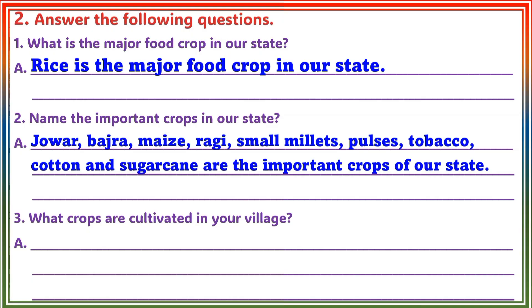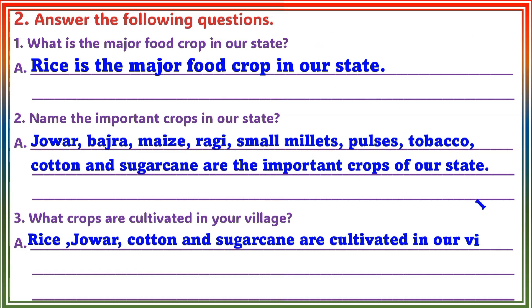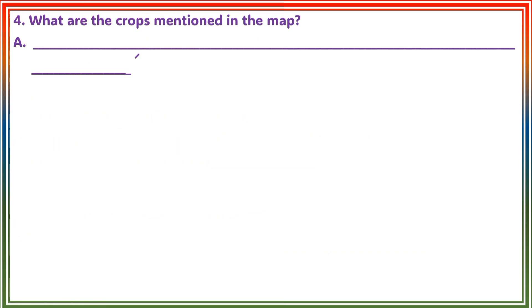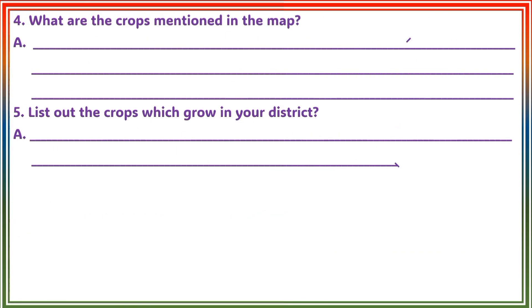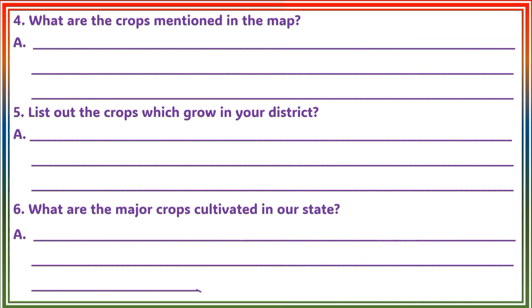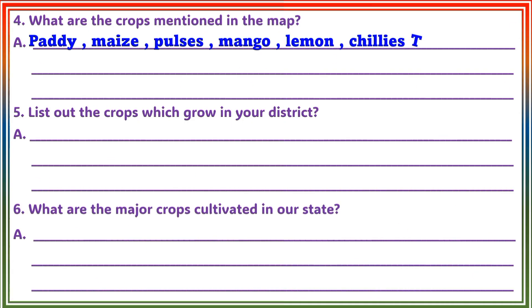Question 3: What crops are cultivated in your village? Answer: Rice, Jowar, Cotton, and Sugarcane are cultivated in our village. Question 4: What are the crops mentioned in the map? Answer: Paddy, Maj, Pulses, Mango, Lemon, Chillies, Tobacco, etc.